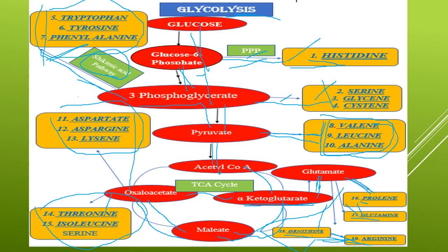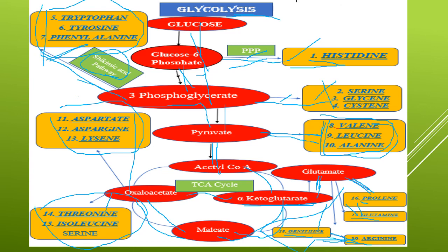That is about the amino acid pathway. The acetate-mevalonate pathway is also known as isoprenoid biosynthesis. That is about the first part in Unit 1. Thank you.